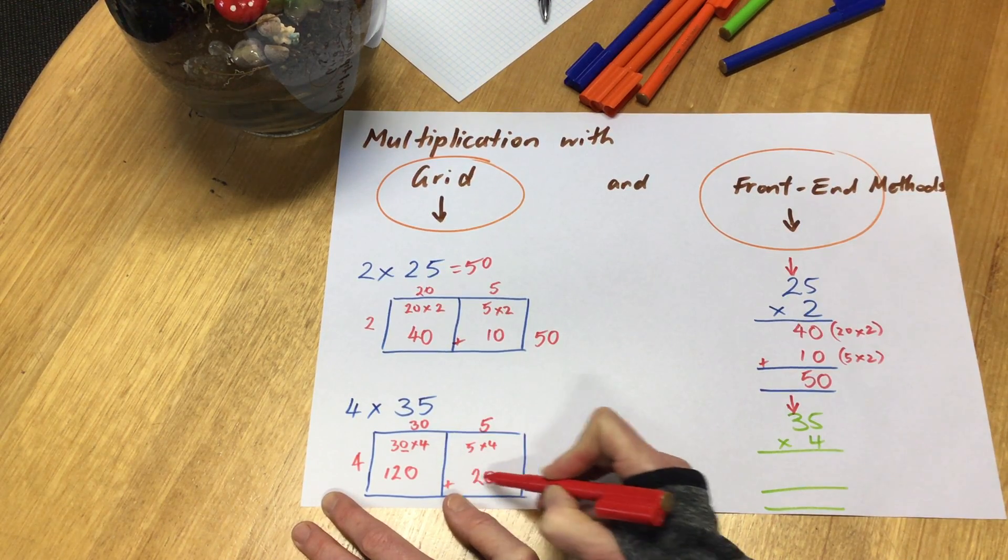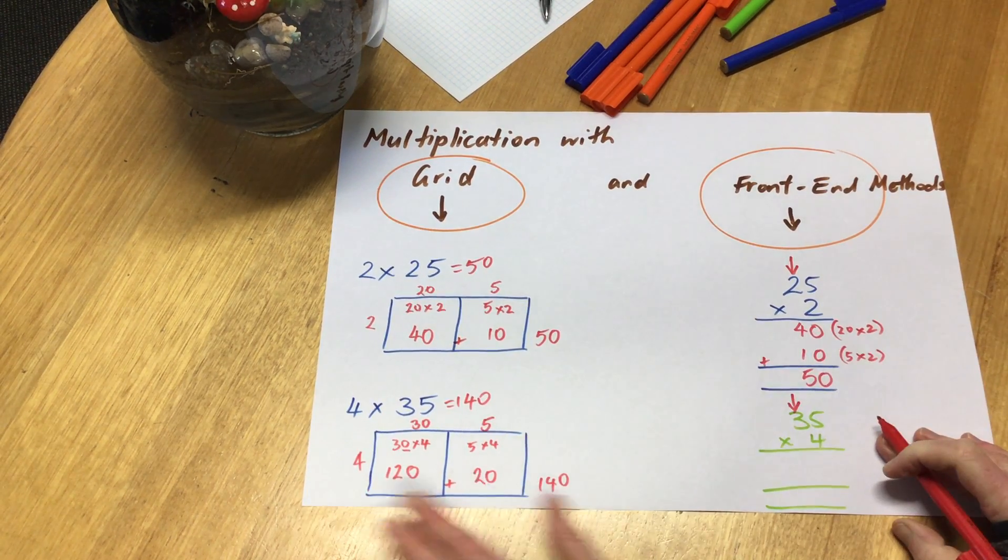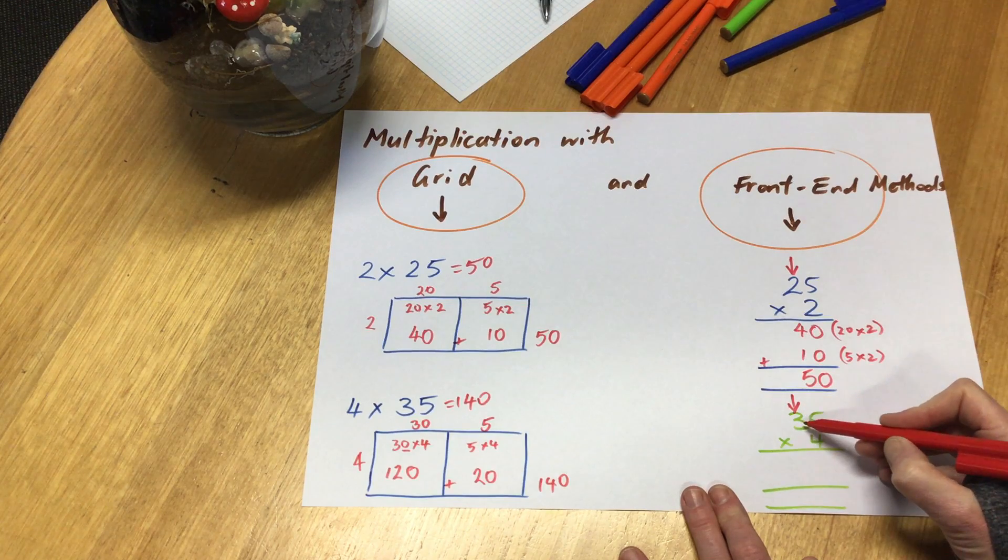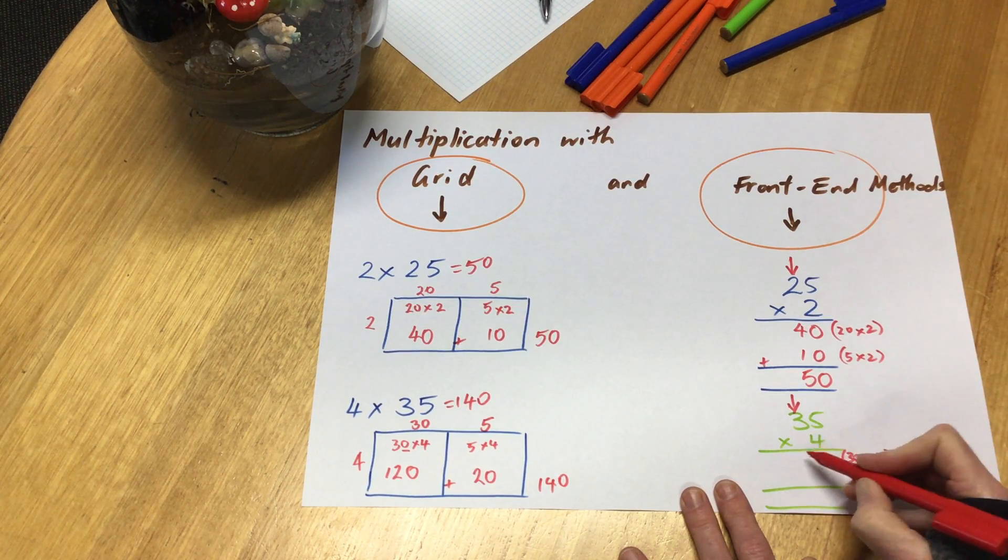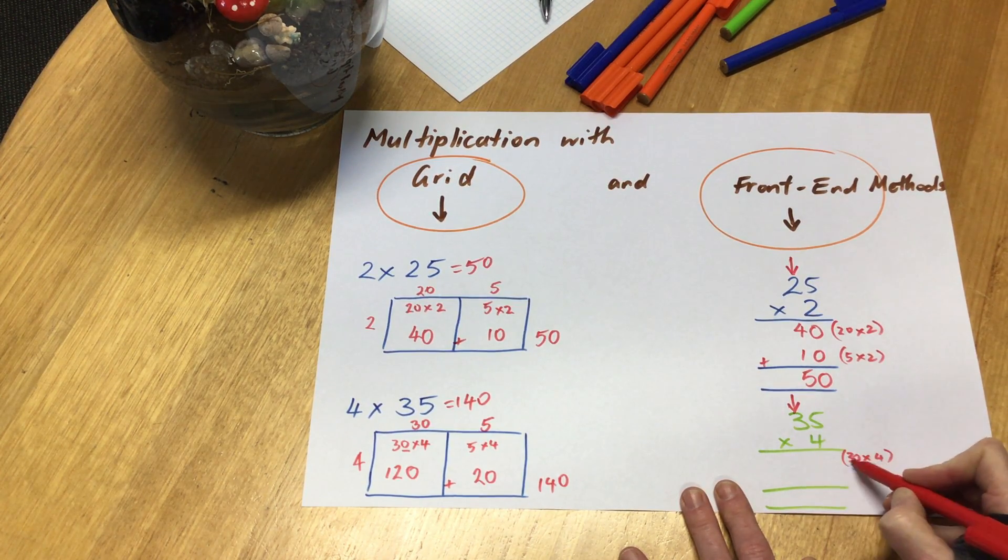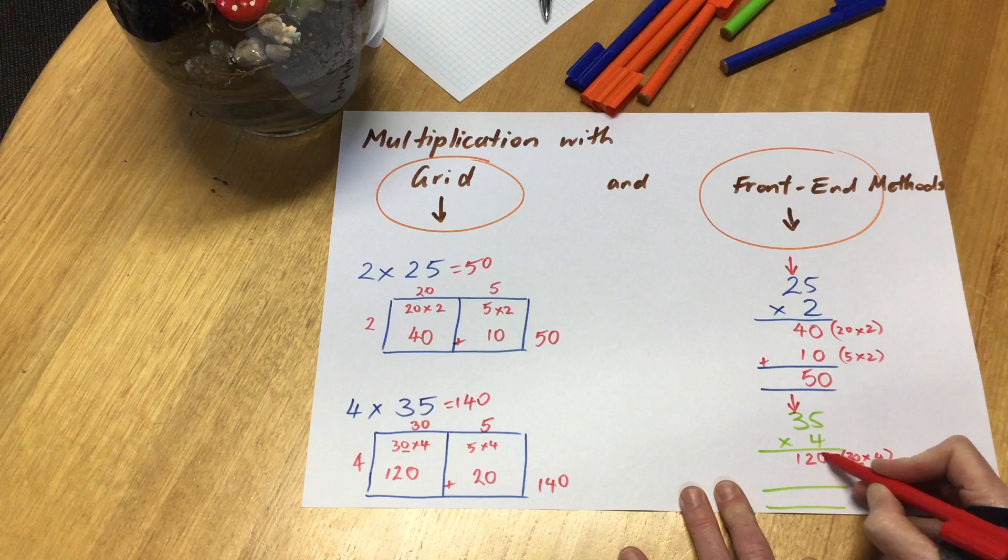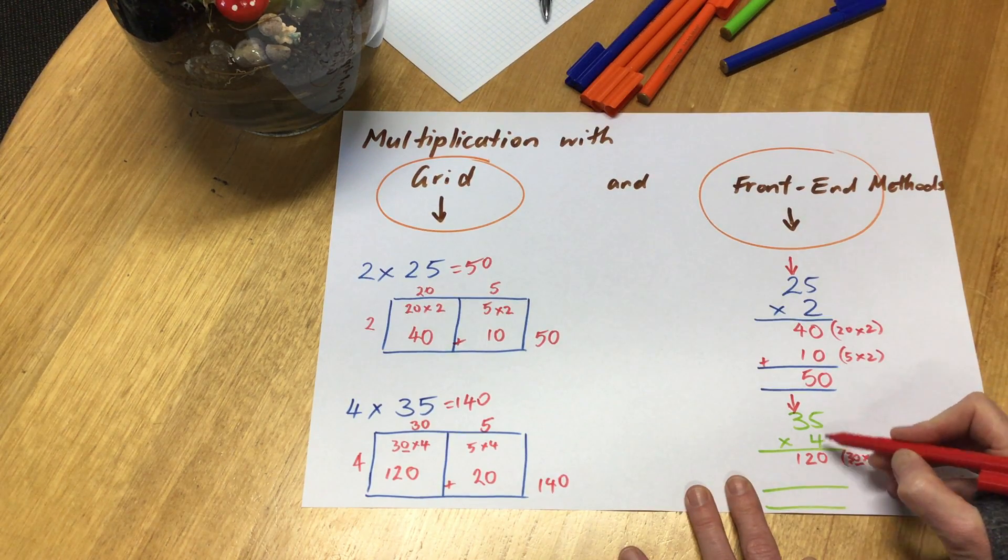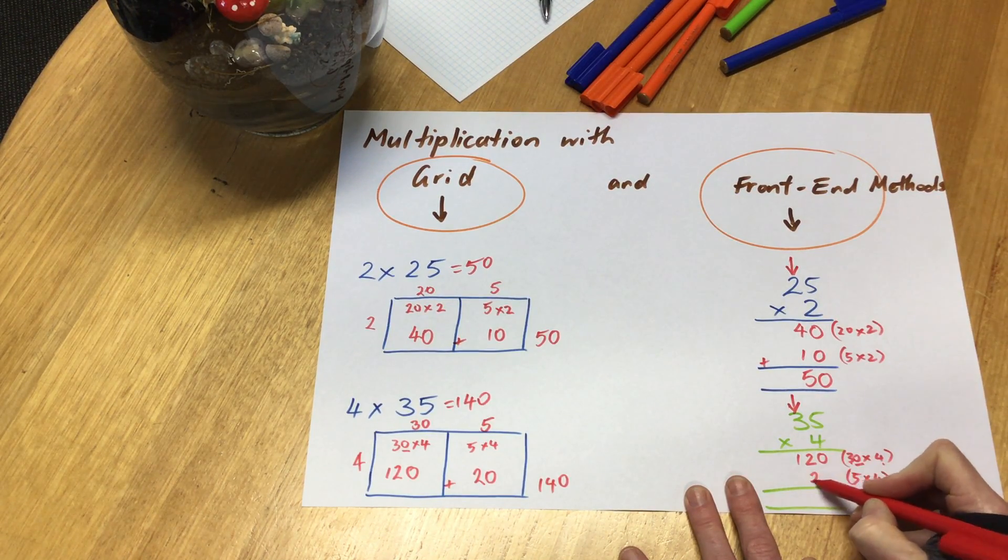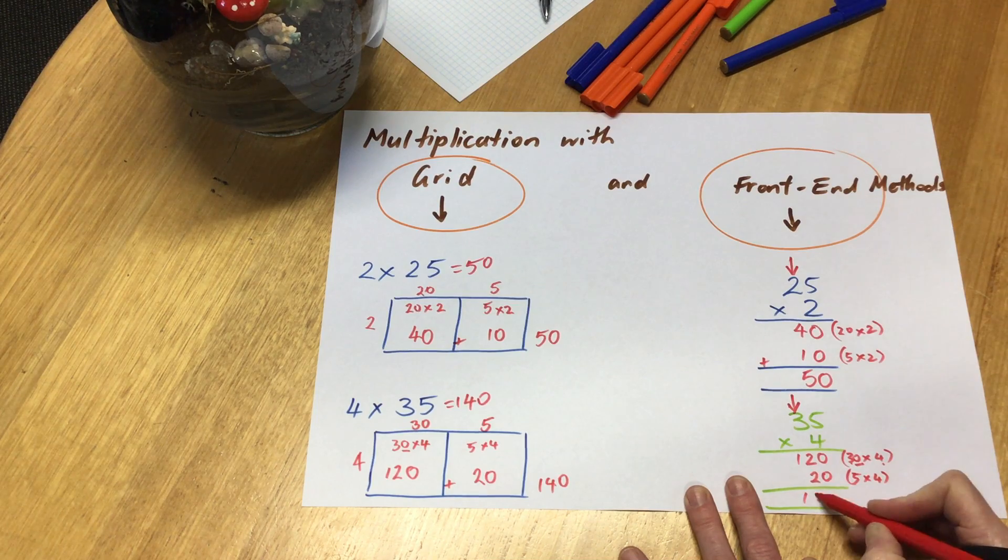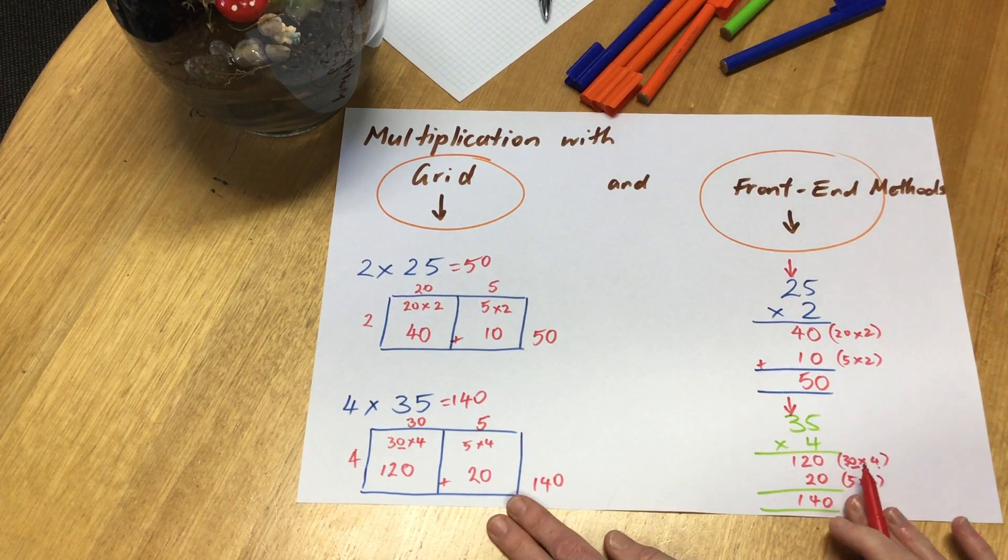Let's check it with the front-end method. Starting at the front end, 30 times 4. 3 fours is 12, I'm talking about 3 tens here, so I've got to remember that they're tens. 5 fours are 20, that's what I'm doing in this section. Then I'm adding all of that up and I get 140.